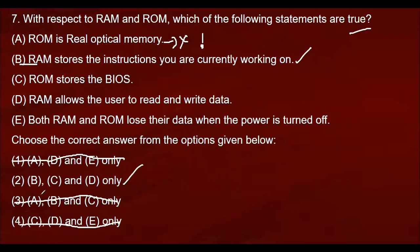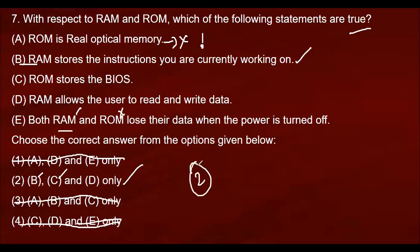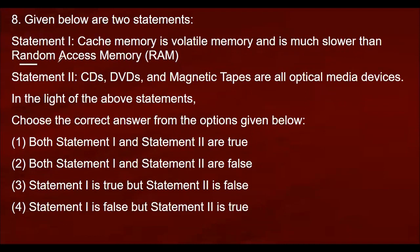RAM stores the BIOS. Both RAM and ROM lose their data when the power is turned off — the E statement was added. Options 1 and 4 are wiped out; the best option is 2. Cache memory is volatile and is much slower than random access memory.